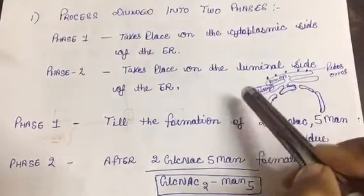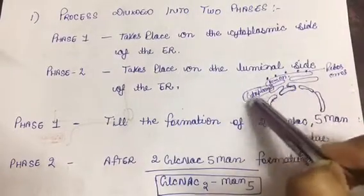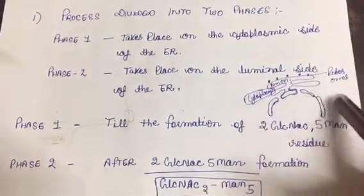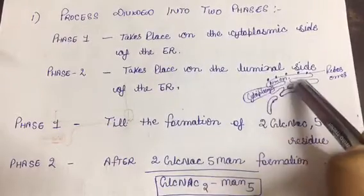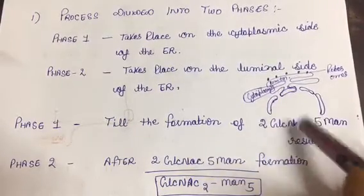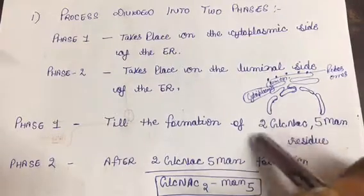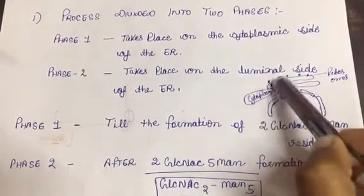Phase one, which starts on the cytoplasmic side, this process. And later on when five mannose and two N-acetylglucosamine structure is formed, then after this it flips.